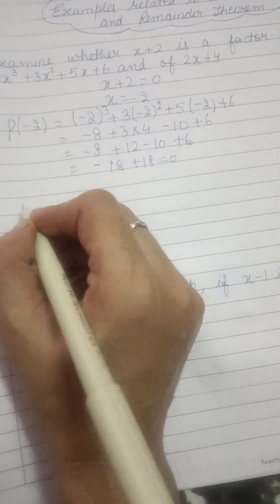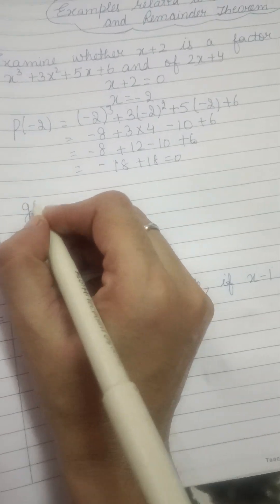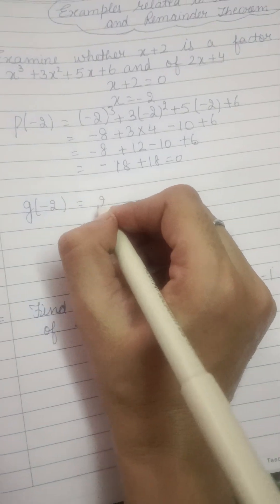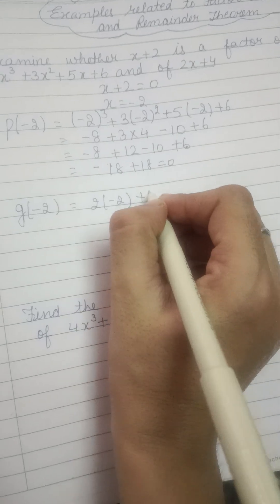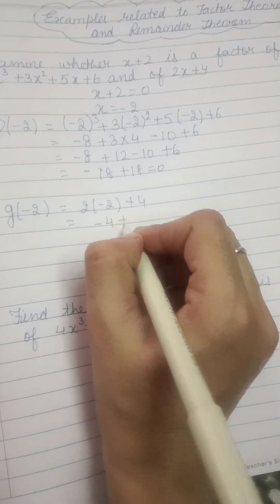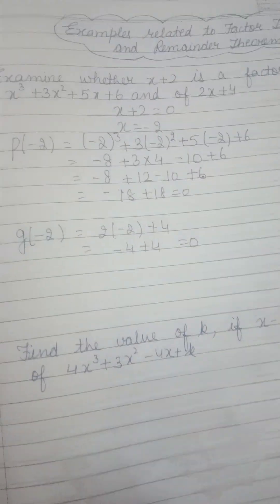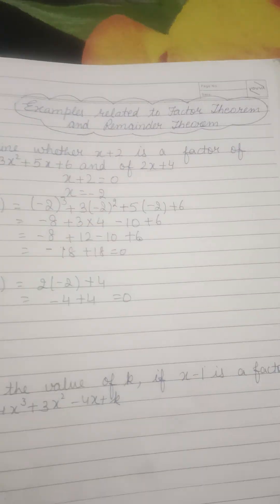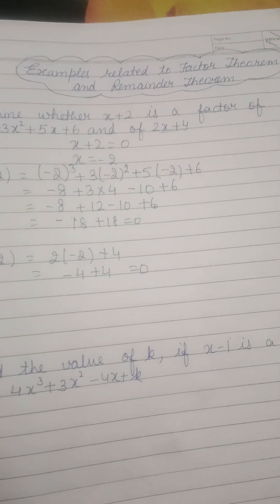Next, हम इसका भी निकाल के देखेंगे. This is let it is gx. So g minus 2 is equal to 2 into minus 2 plus 4. This will be equal to minus 4 plus 4. This is 0. So that means x plus 2 is a factor of px and gx. Both, दोनों का ही factor है.